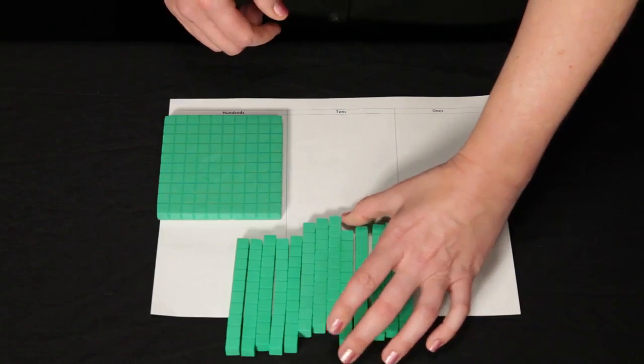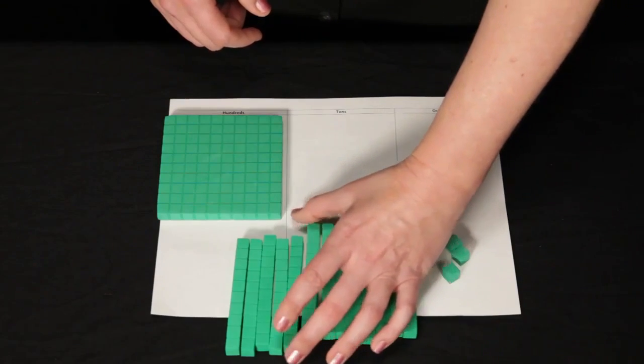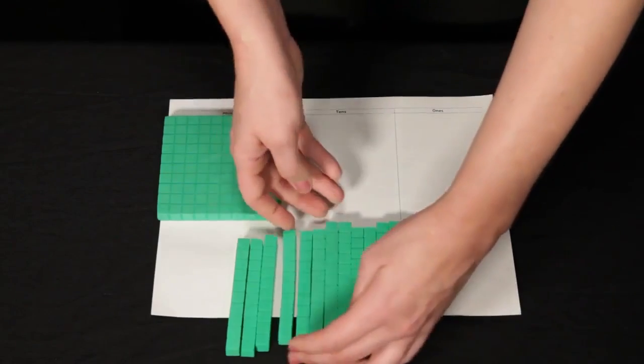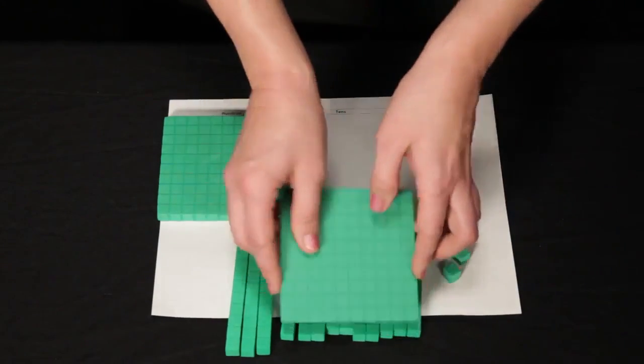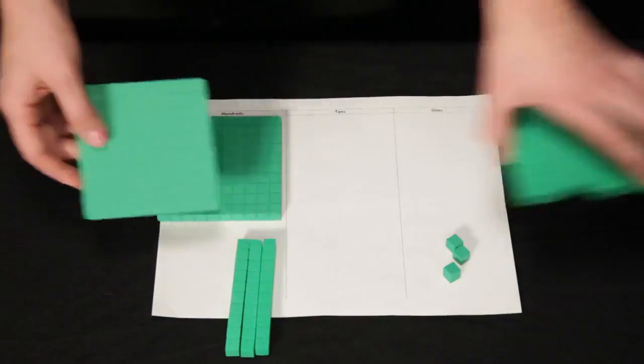Let's see. 1, 2, 3, 4, 5, 6, 7, 8, 9, 10. I do have a set of 10 tens. 10 tens is the same as 100 so I can exchange those.